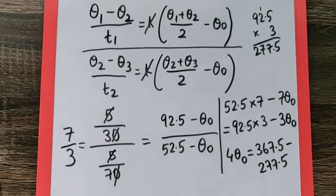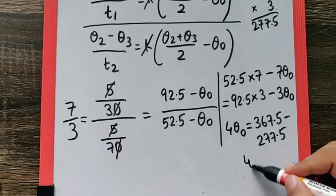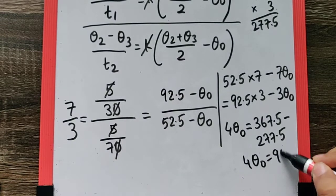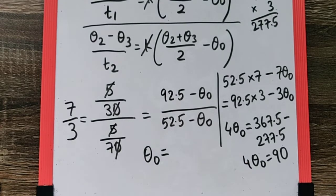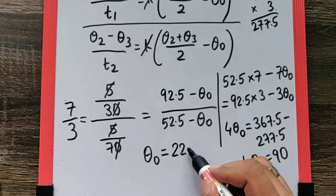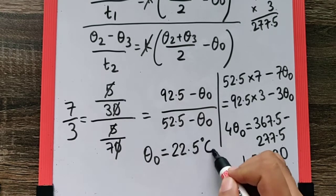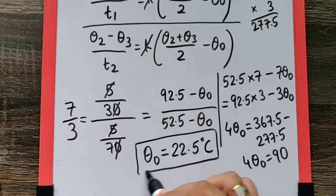So 4 theta naught is equal to 90. That means theta naught we can get it as 22.5 degree Celsius. Now definitely this is not the final answer because we also want to find the time taken to cool from 50 to 45 degree Celsius.